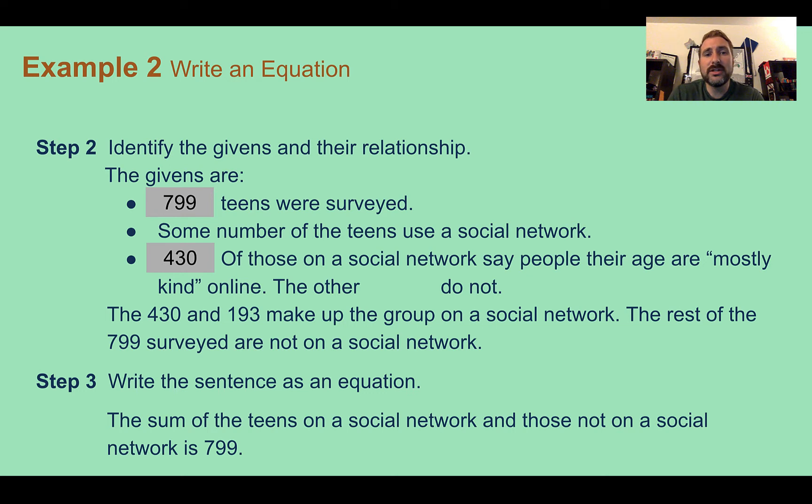430 of the ones on the social network say people are mostly kind. The other 193 do not. We also know that the 430 and the 193 make up the ones that are on the social network. The rest of the 799 are not.